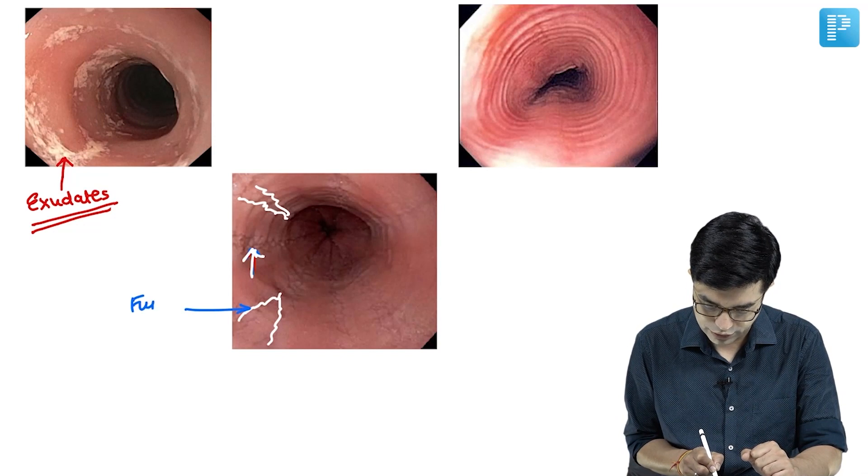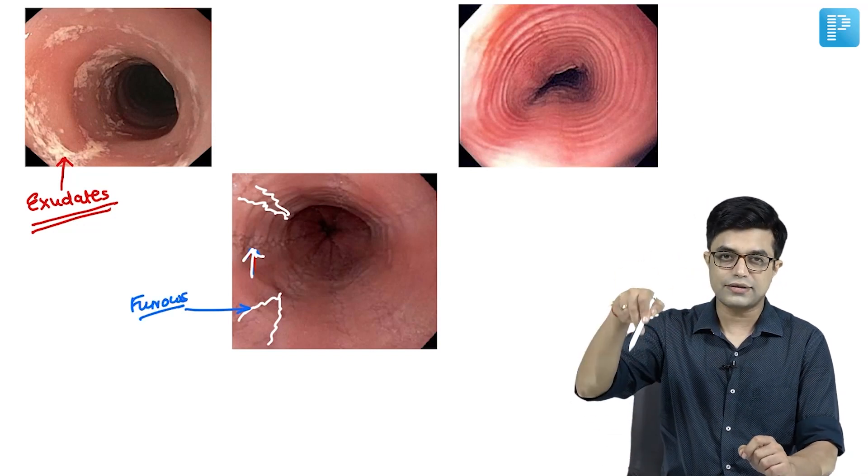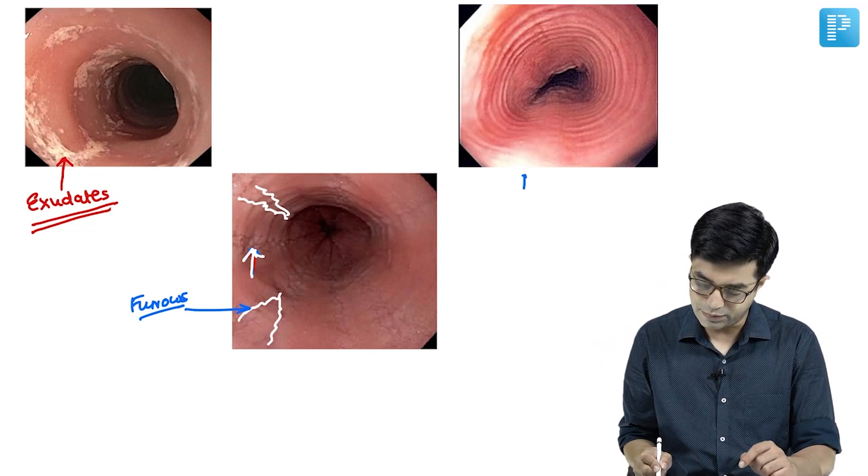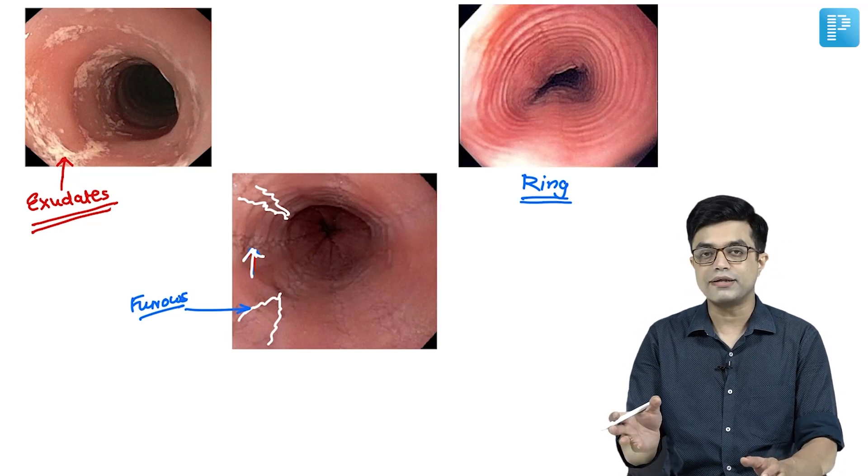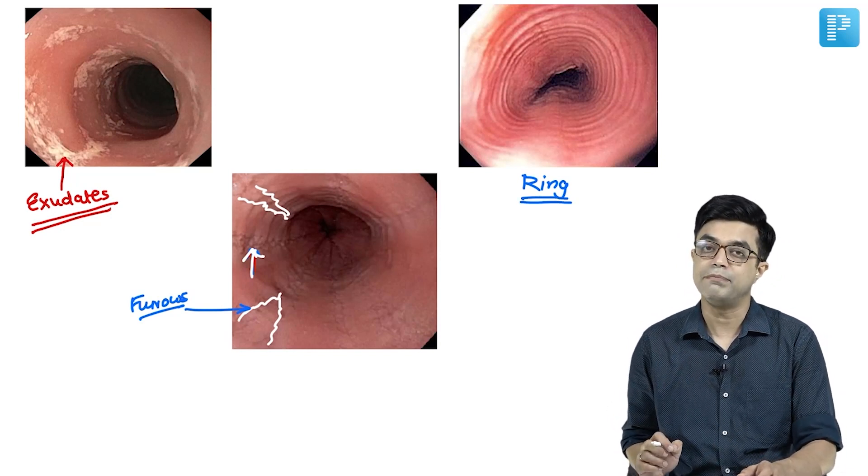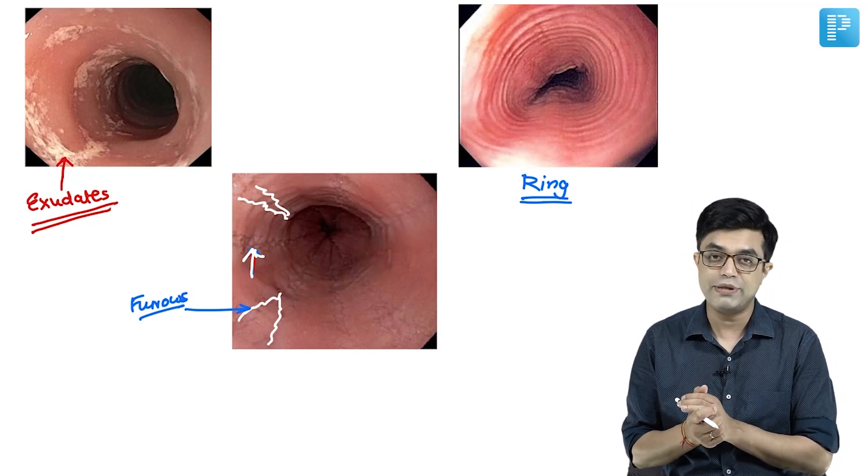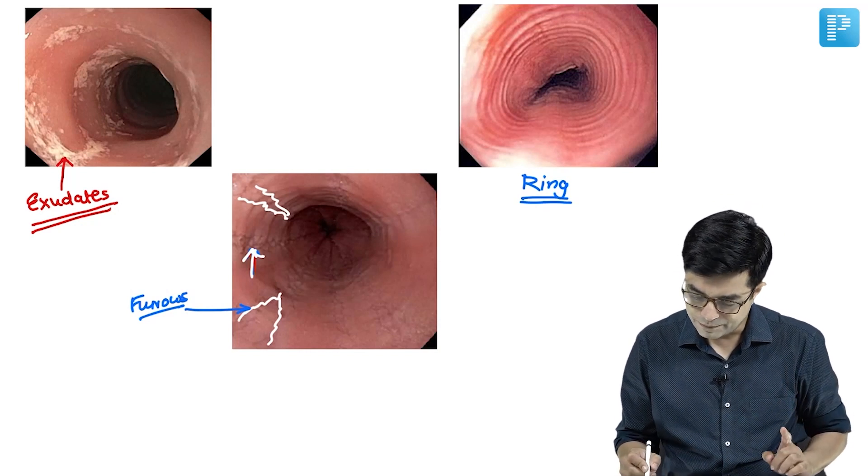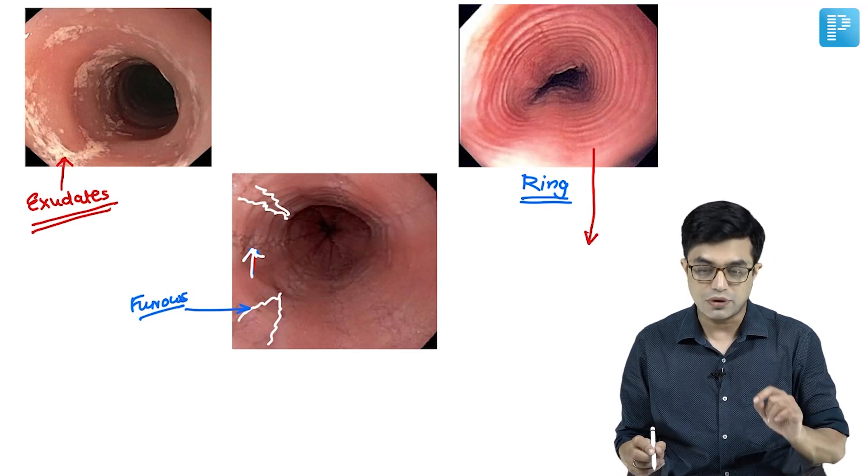The third pattern shows trans-circumferential rings. Two or more patterns can coexist in the same patient. The extensive ring pattern is also called the tracheal ring pattern.